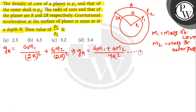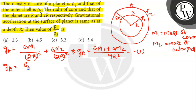The acceleration due to gravity at point B will be due to the core only, since we know that the gravitational field inside a hollow spherical shell is equal to zero. So we can write: g_B = G·m1 / r². This is equation 2.